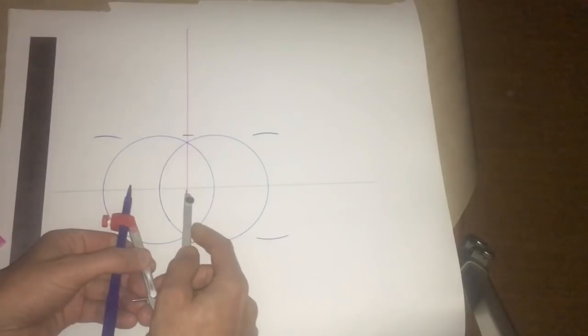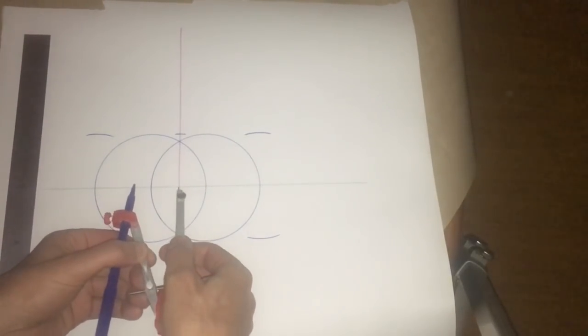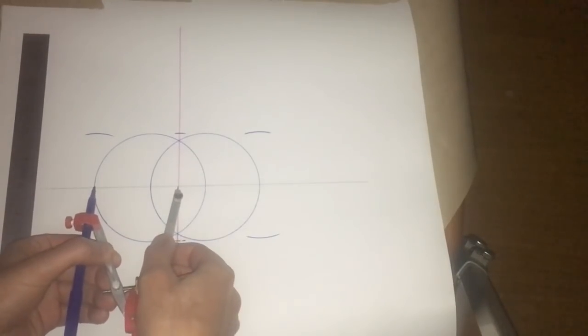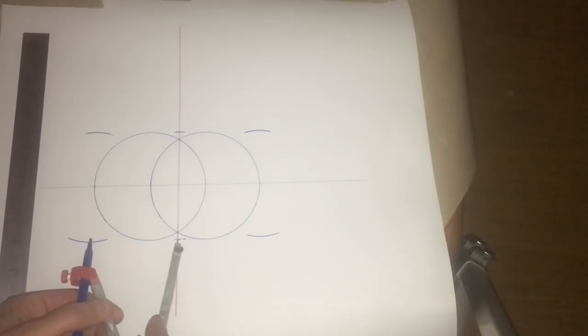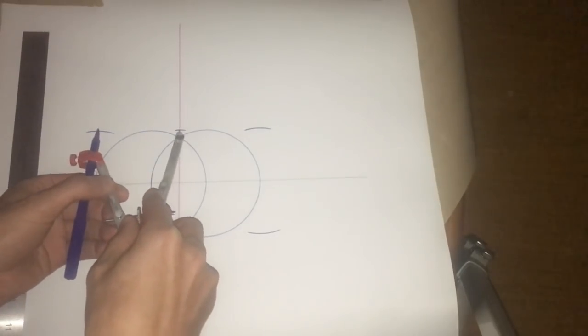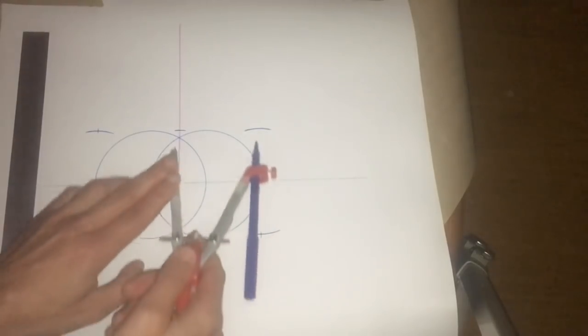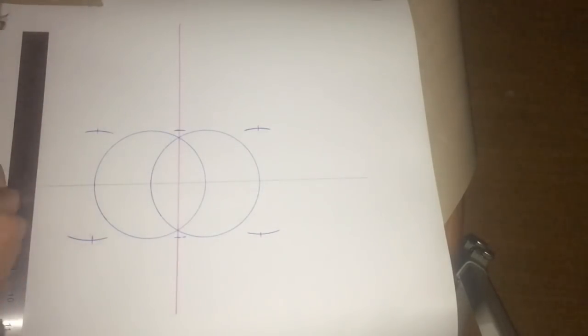Now we set our compass from the center to the edge of the vesica, and then we can go to the bottom. Do the same on the other side. Now we have all the points that we need to create that rectangle.